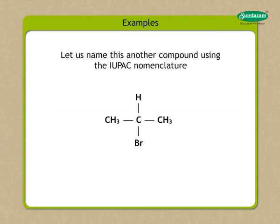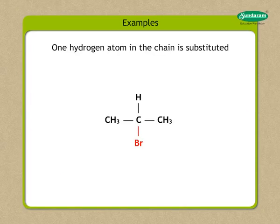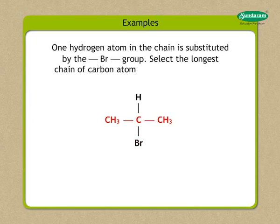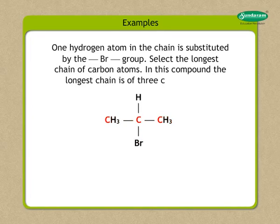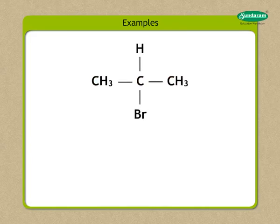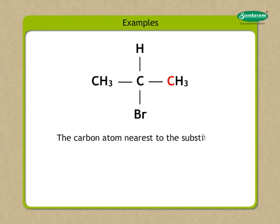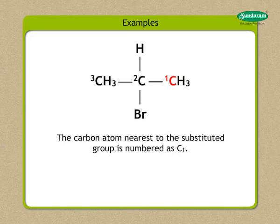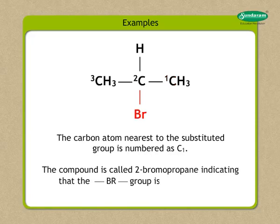Let us name another compound using IUPAC nomenclature. One hydrogen atom in the chain is substituted by the -Br- group. Select the longest chain of carbon atoms. In this compound, the longest chain is of three carbon atoms, and the name of the parent alkane is propane. As the carbon atoms are bonded in a straight line, it is a straight chain compound. The functional group is halide — in this case, bromo. The carbon atom nearest to the substituted group is numbered as C1.